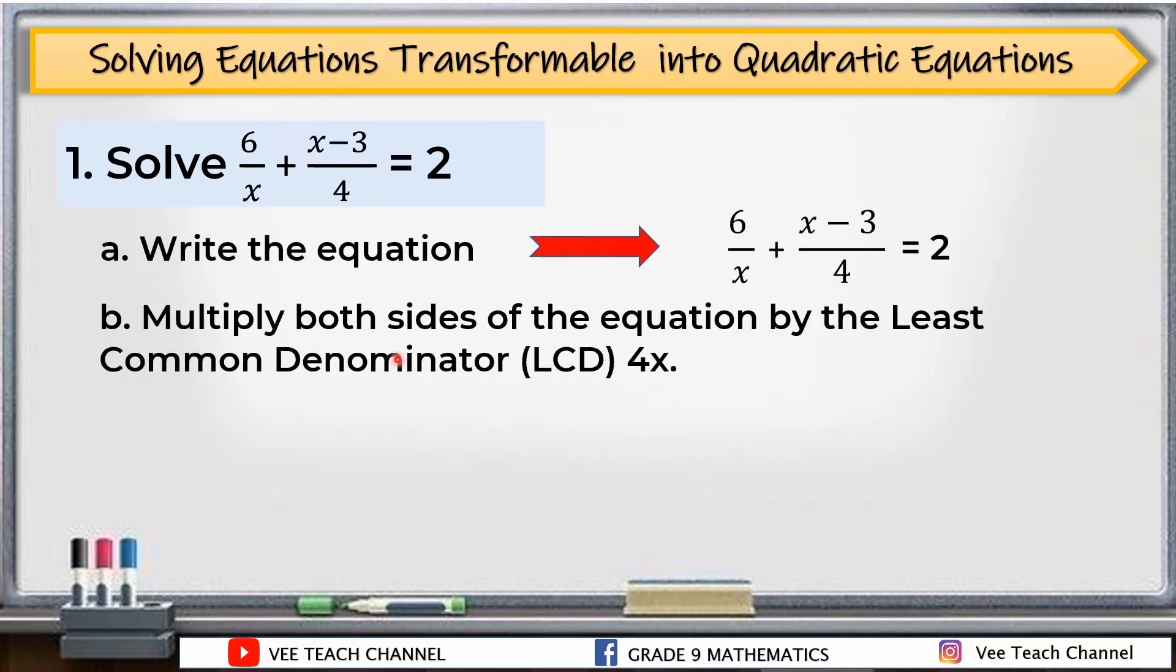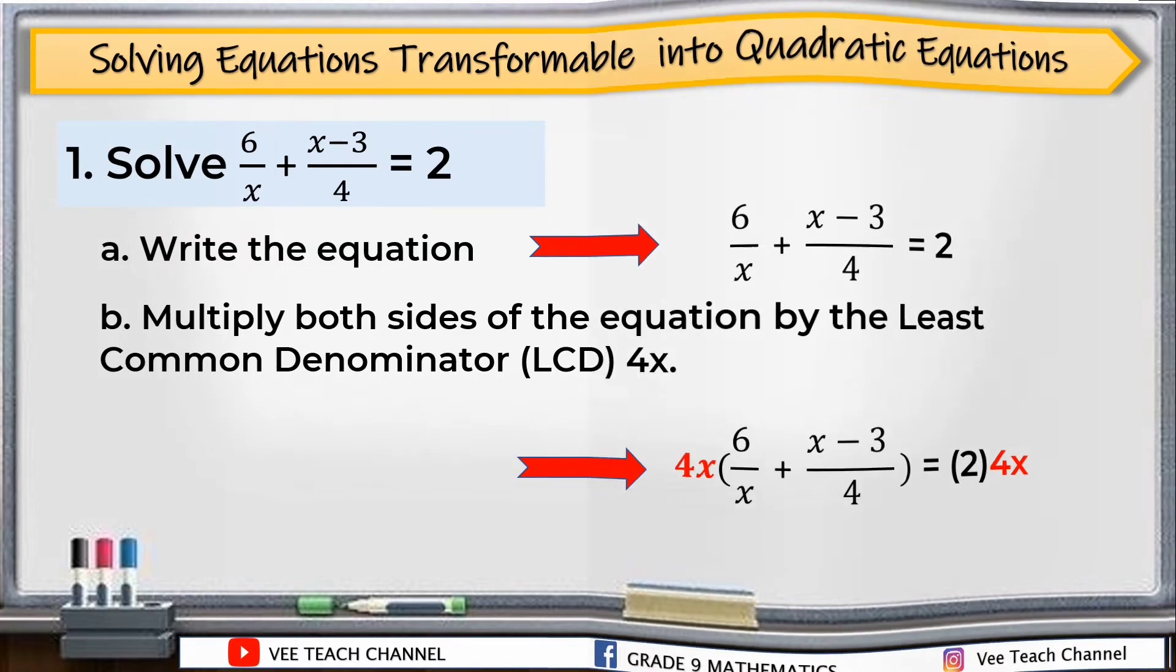First, we need to write the equation, then multiply both sides by the least common denominator or LCD. Just like fractions with unlike denominators, we will get the LCD. The LCD is 4x, and we will multiply 4x to both sides of our equation.